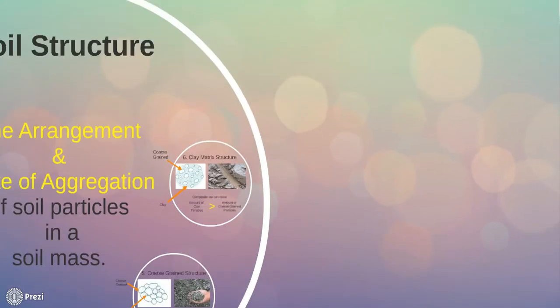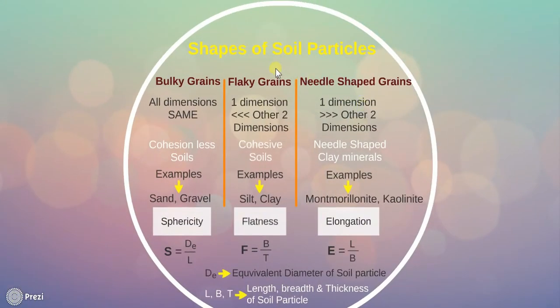Next is shapes of soil particles. The shape of soil particles is a useful soil property in case of coarse grained soils. The shapes of soil particles affect the engineering behavior of coarse grained soils. The shape of grains in coarse grained soil can be examined with naked eyes, whereas fine grained soils require microscopic examination. Though there is no universally accepted grain shape classification, the grain shapes may be classified as bulky grains, flecky grains and needle shaped grains.